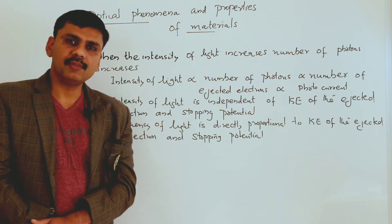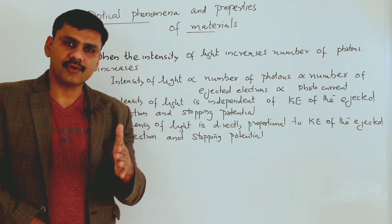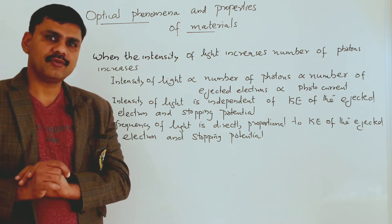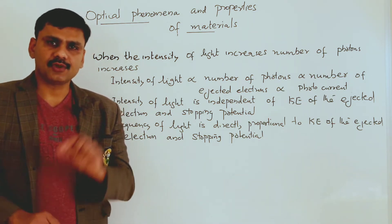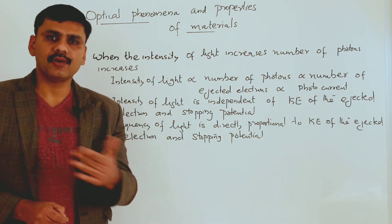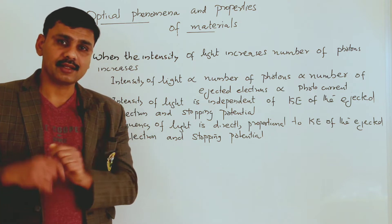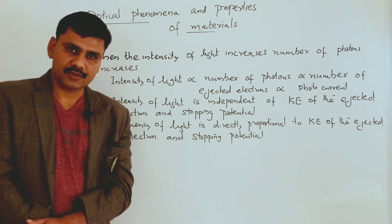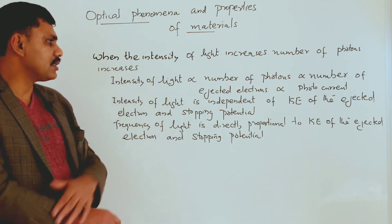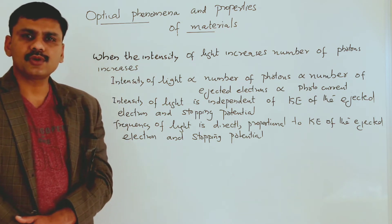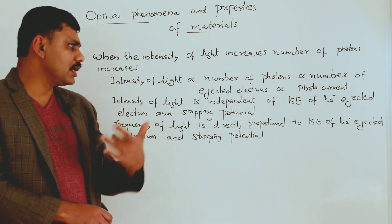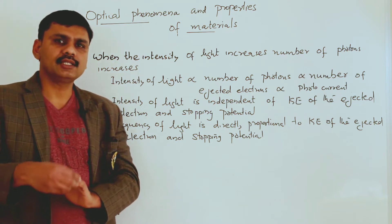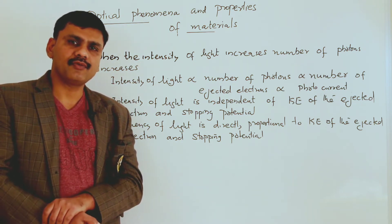There is no time delay between the incidence of the photon and the ejection of the electron. A photon is a particle and an electron is also a particle, so one photon ejects one electron from the metal surface. When the intensity of light increases, the number of photons increases, and when the number of photons increases, the number of ejected electrons also increases.